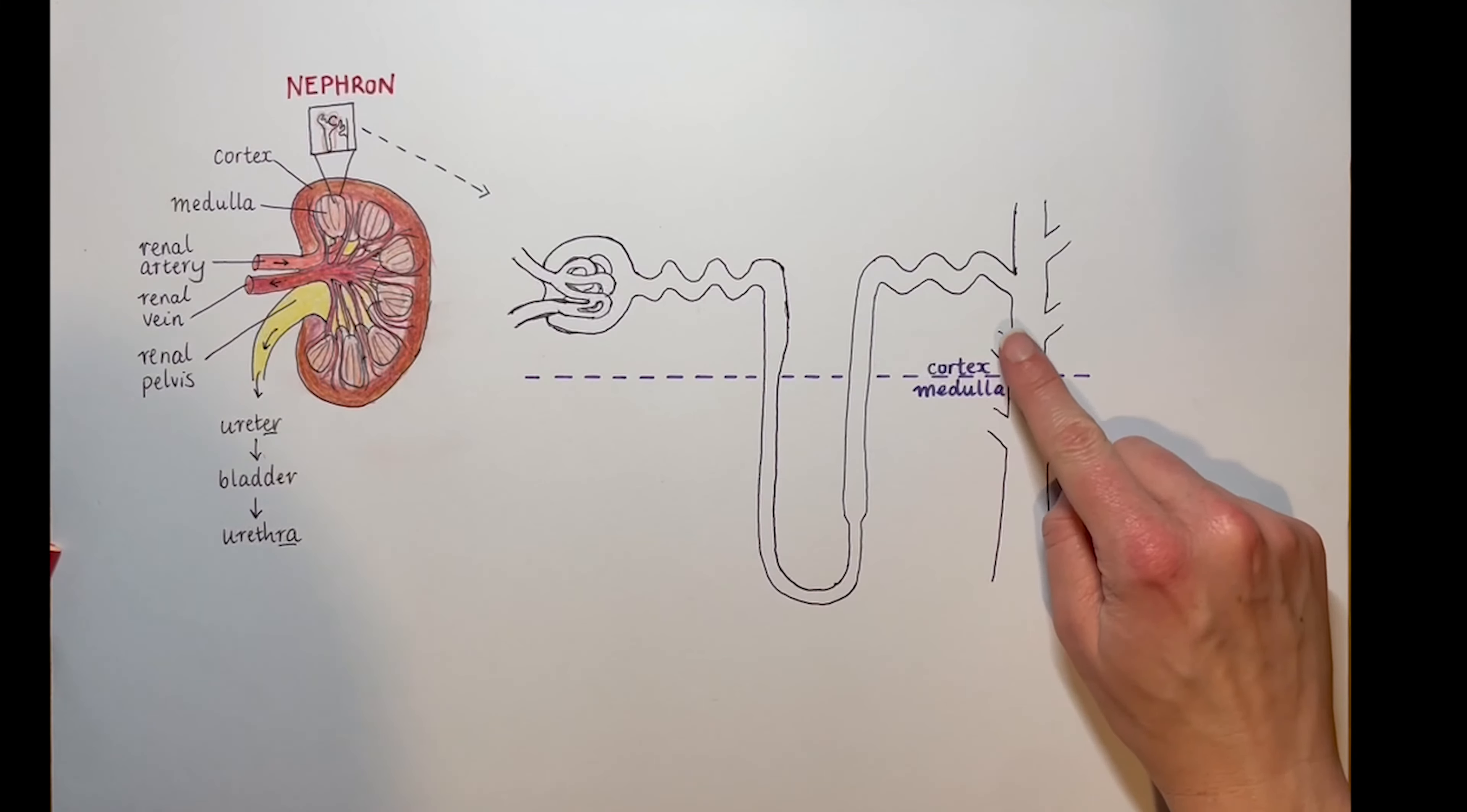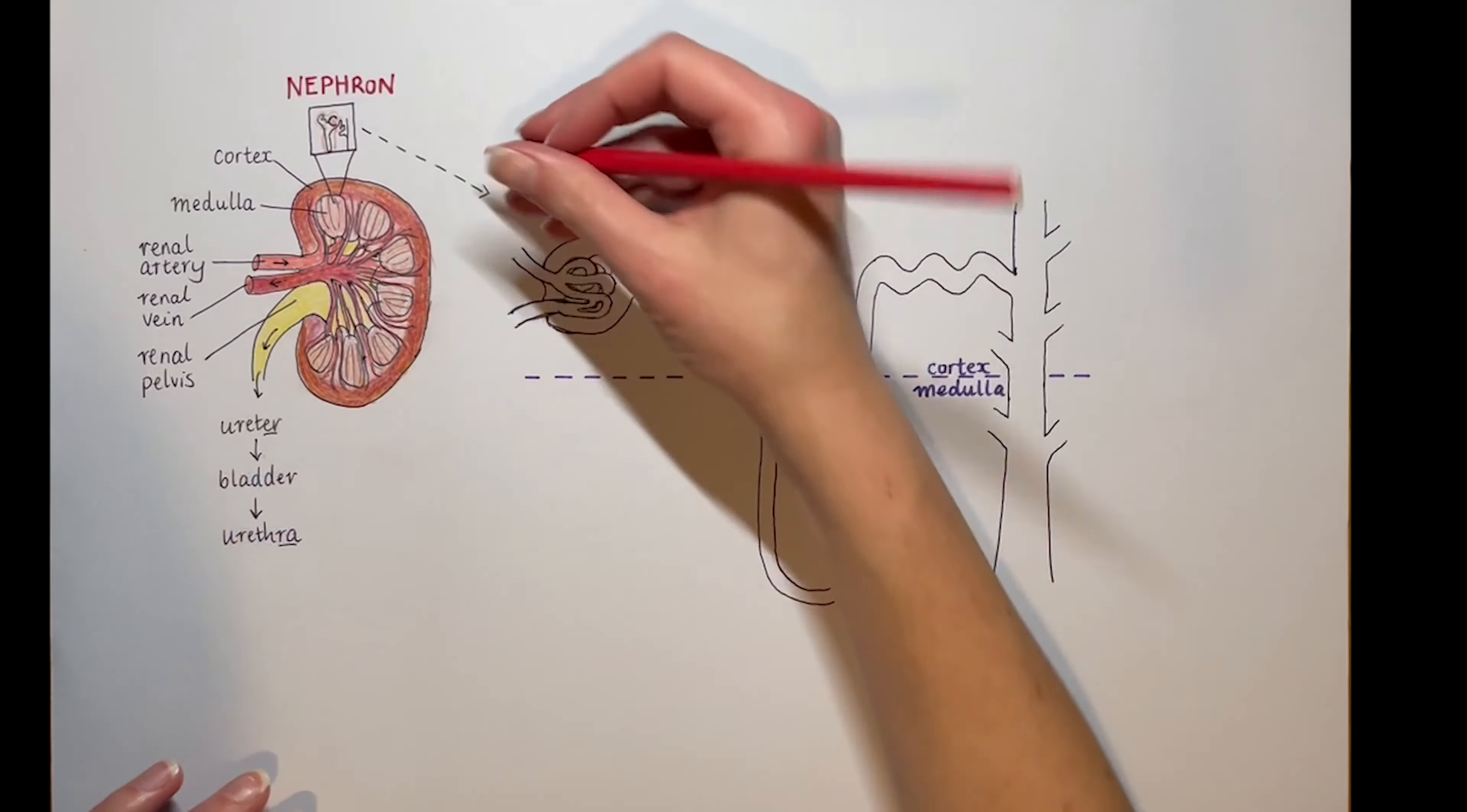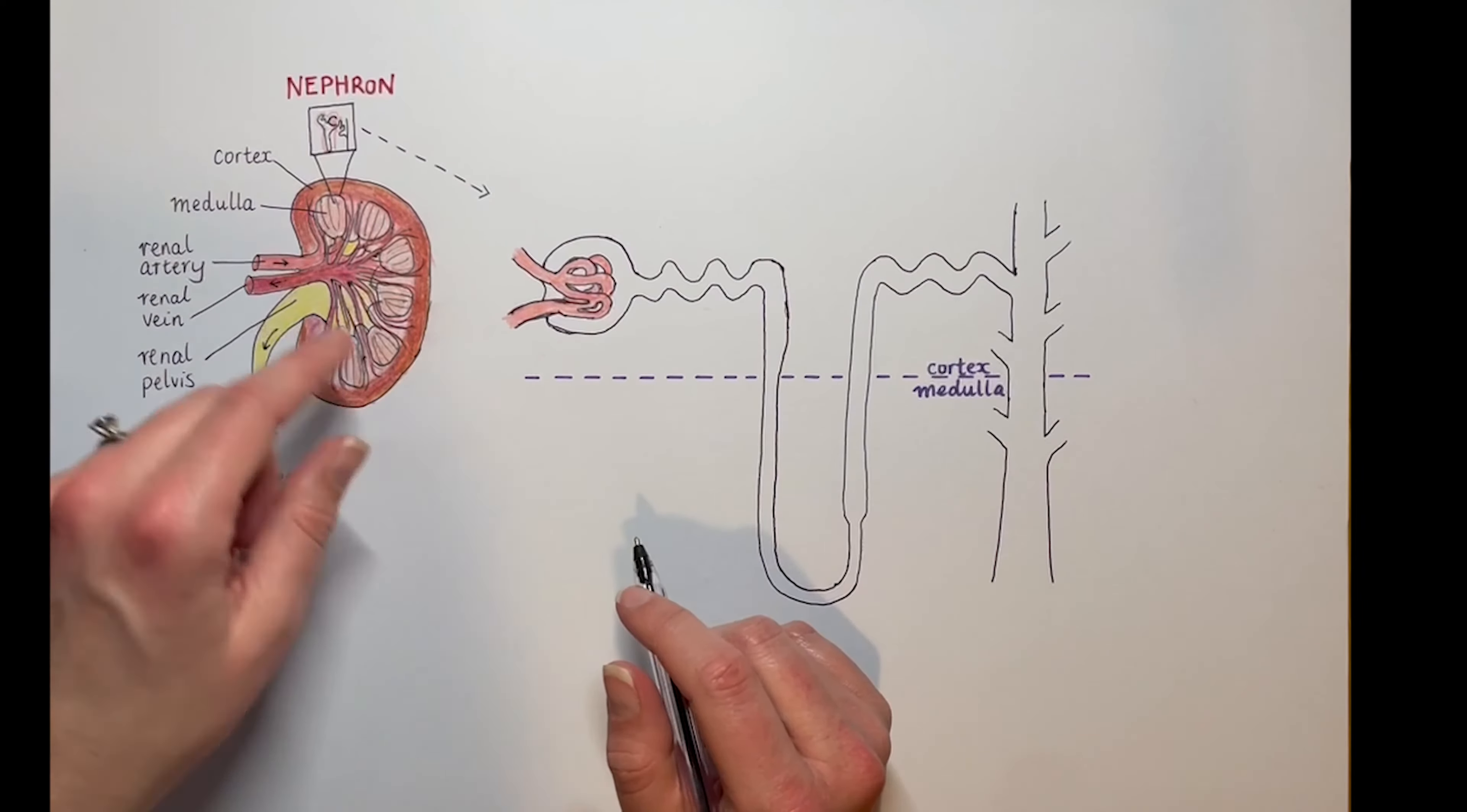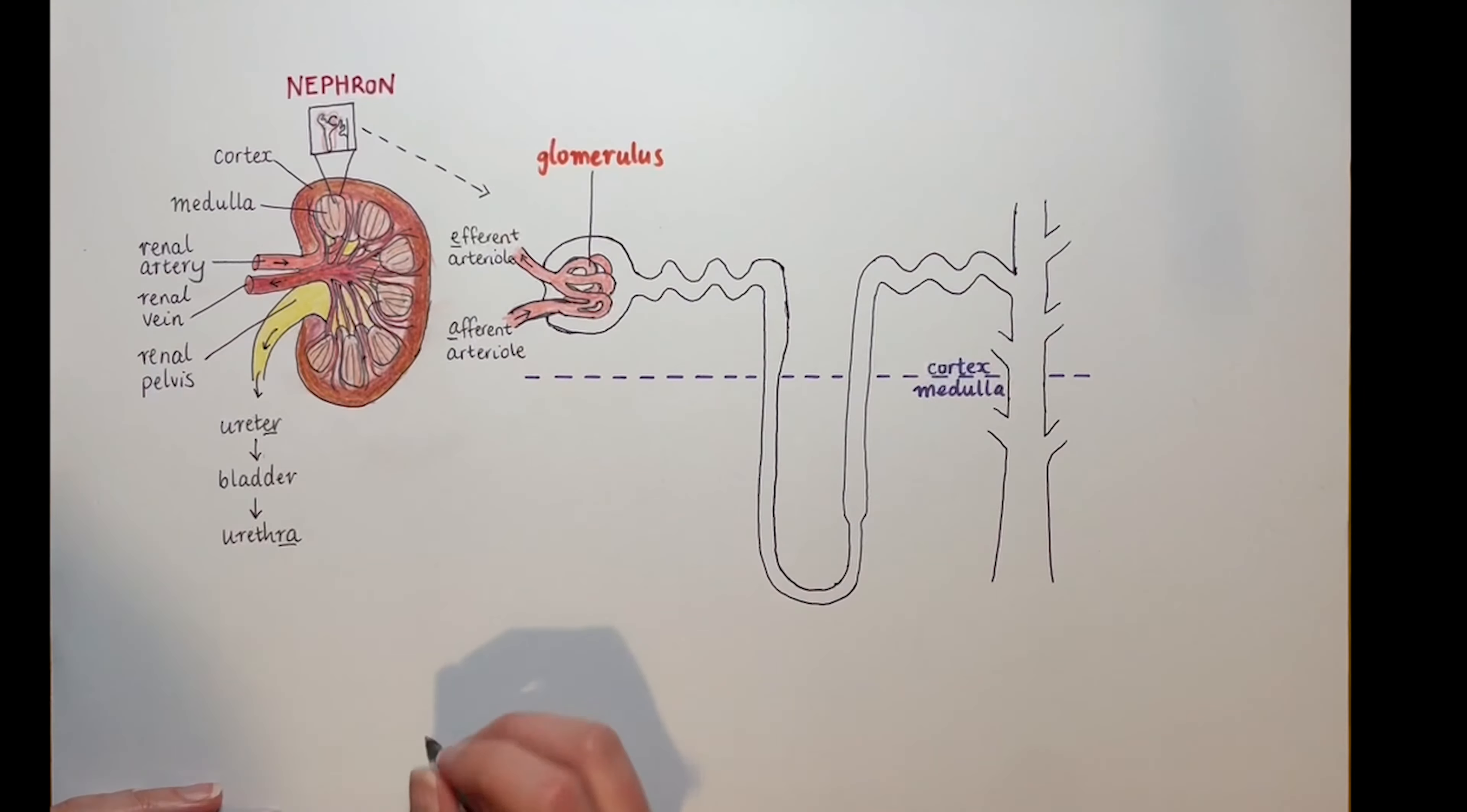In the top half of the nephron we are in the cortex of the kidney, down the bottom the medulla. We're starting with some blood, and that's important. Remember, the job of the kidney is to filter your blood. So in it goes from the renal artery via the afferent arteriole, under quite a bit of pressure, to a network of capillaries called the glomerulus. It leads via the efferent arteriole. The words afferent and efferent, coming and going, are used in other contexts of biology as well, like with neurons.